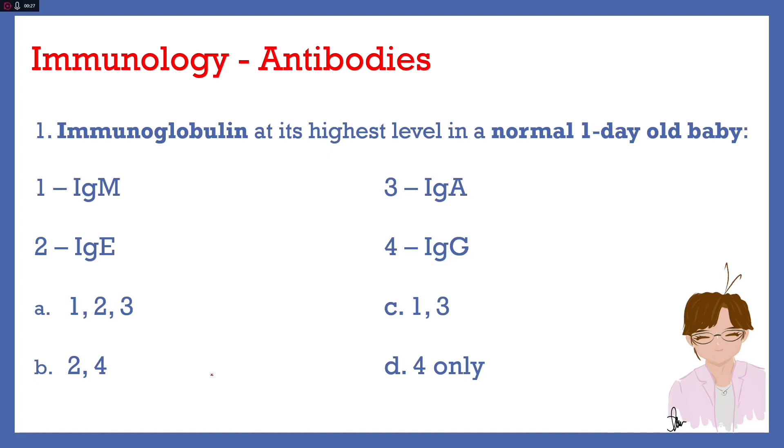Letter A, 1, 2, 3. B, 2, 4. C, 1, 3. Or D, 4 only. The answer here is D, 4 only, IgG. Our babies do not usually produce their own antibodies but upon birth they will have maternally derived IgG and thus they will have IgG at its highest level even in their first day of life. The maternal IgG is transplacentally transferred in utero and so it will be increased in our newborns.